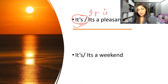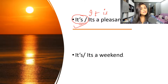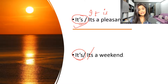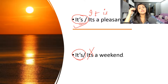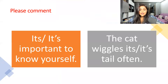'It's a weekend — time to chill, time to have fun!' Which 'its' is correct here? 'It's' with an apostrophe is correct because we are saying 'it is a weekend,' not indicating any possession or belongingness.